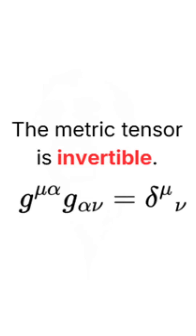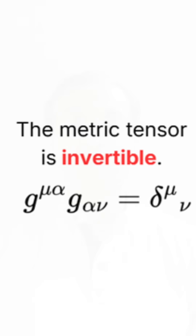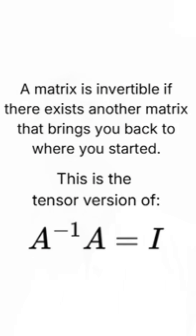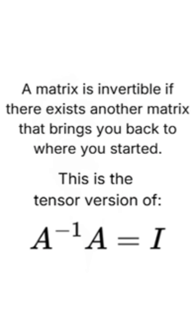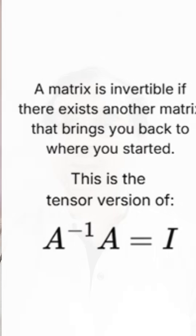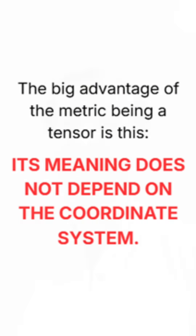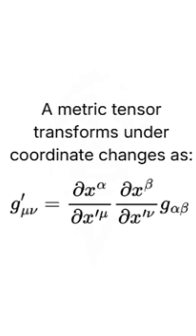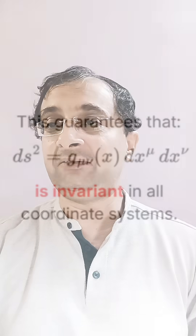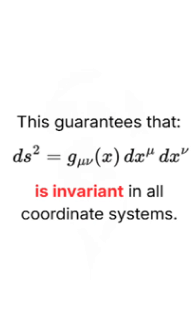The components of the metric tensor vary from point to point. It is also invertible — there exists an inverse metric tensor, as you can see on the screen, which satisfies the defining relation. This is useful for raising and lowering vector indices in calculations. Additionally, it is a tensor in nature, meaning it transforms under coordinate changes while keeping the physics and geometry invariant, making it a fundamental object of study in geometry and physics.